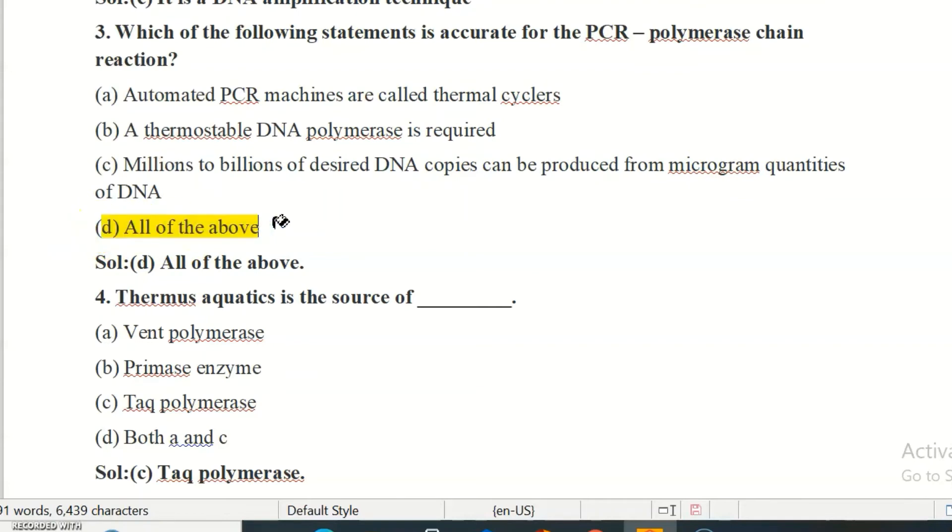MCQ number four: Thermus aquaticus is the source of vent polymerase, primase enzyme, Taq polymerase, and option D is both A and C. The correct option is C, Taq polymerase.